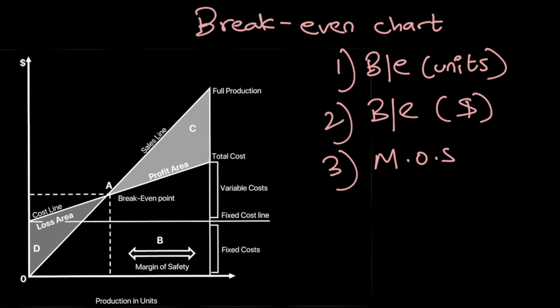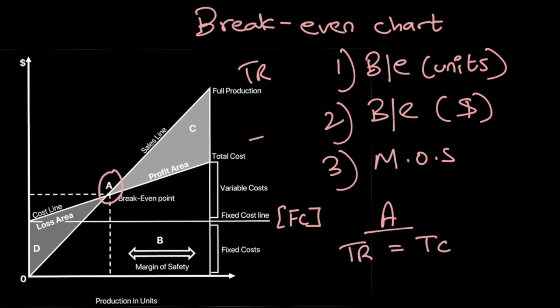Referring back to the previous videos, this horizontal line is your fixed cost. It's horizontal because regardless of the change in output, your fixed cost remains the same. Now focus on Point A — that is the point where the total revenue line is intersecting the total cost line. Where total revenue and total cost intersect, your profit will be zero.